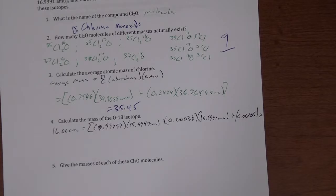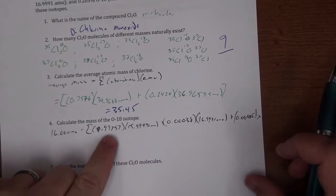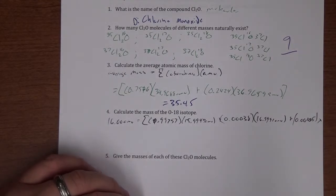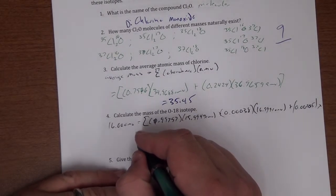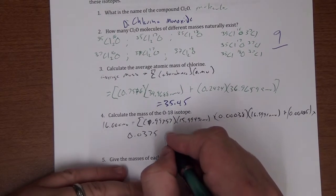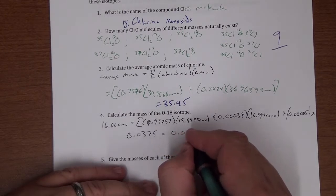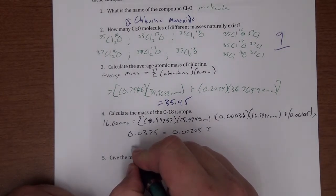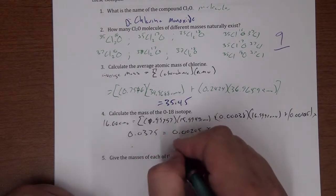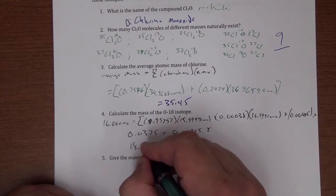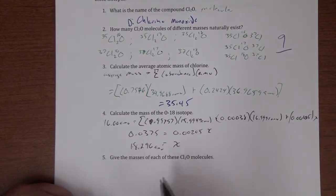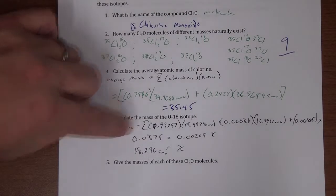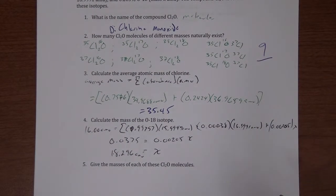We multiply the known terms together and add them, then subtract that sum from 16.00. This simplifies to: 0.0375 = 0.00205x. Dividing both sides gives x = 18.296 AMUs. So we're using the same weighted average formula, but now the unknown is one of the individual isotope masses rather than the average.